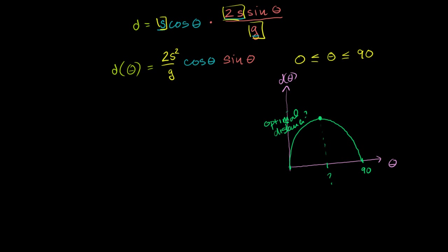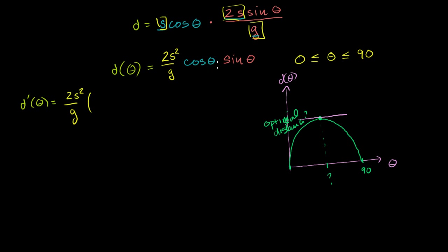So what we need to do is take the derivative of this function and figure out at what angle the derivative — the instantaneous slope — is equal to 0. And then we're done; we will know this optimal angle to shoot the object at. So let's take the derivative. We'll use our derivative rules. The derivative of d with respect to theta — we're assuming s and g are constants, so we can put them out front, and then use the product rule to take the derivative of the rest with respect to theta.